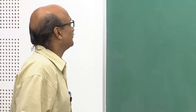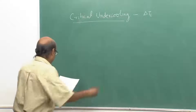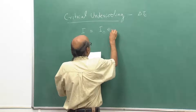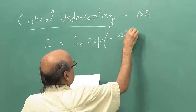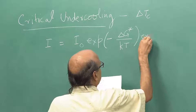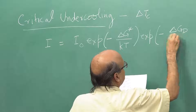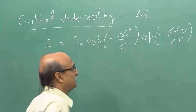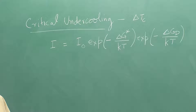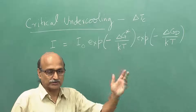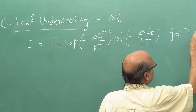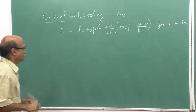Let me write down the equation for the nucleation rate from the last lecture: I equals I-naught times exponential of minus delta G star, the critical free energy for nucleation, divided by kT, multiplied by exponential of minus delta G_d upon kT, where delta G_d is the barrier for an atom to jump across the liquid-solid interface to make the critical nucleus supercritical. This equation is for temperature T less than Tm, the melting point.